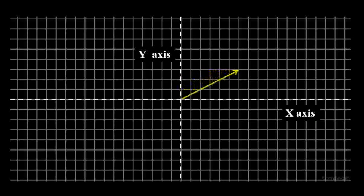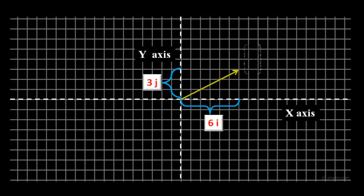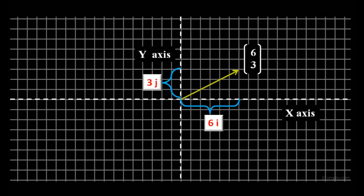A vector can be represented as an arrow in 2D space. The unit vector i is in the direction of the x-axis and the unit vector j is in the direction of the y-axis. This arrow can be written as a column matrix and an expression 6i plus 3j.